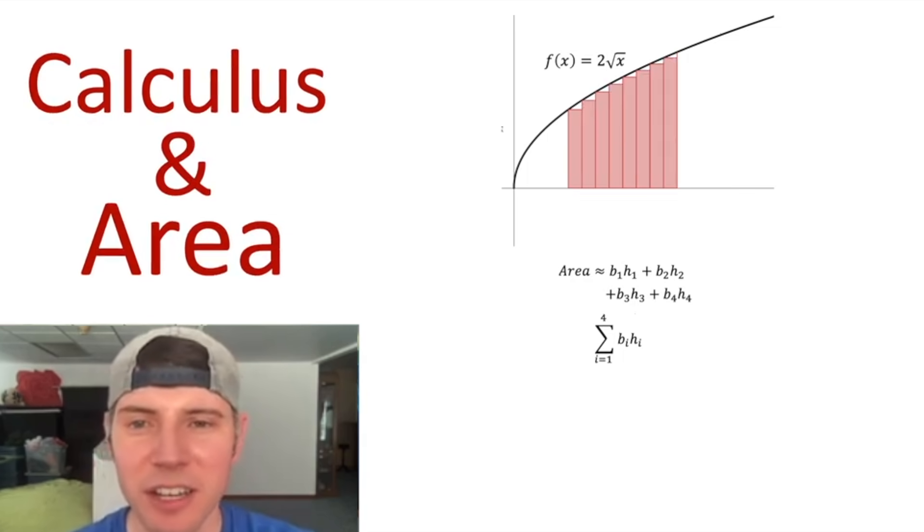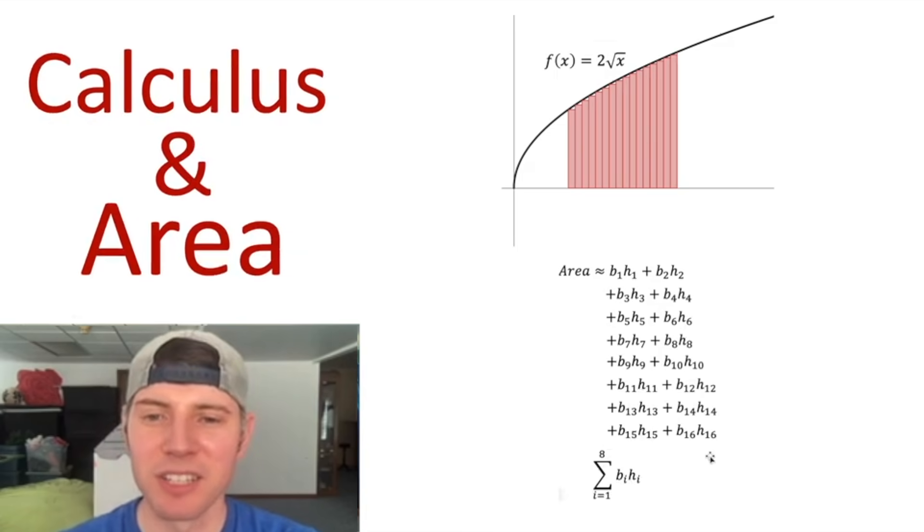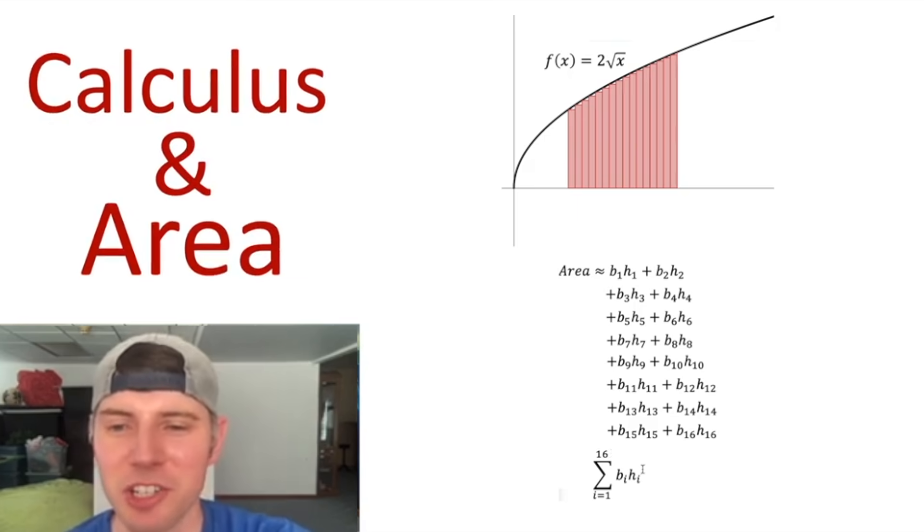We can do it again with eight rectangles, which would make eight here, or change this to an eight. We can do it with 16, which would add up 16 of these, or change our sigma notation to a 16. This shows the advantage of sigma notation. This takes up way less space than this right here.